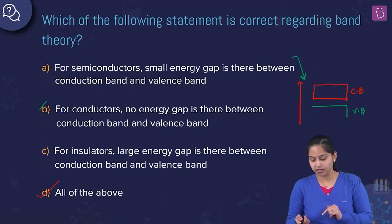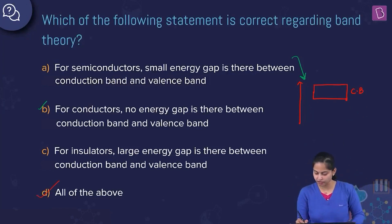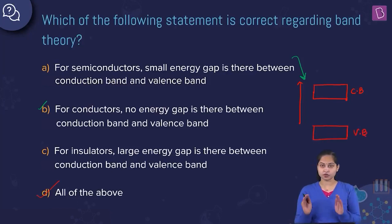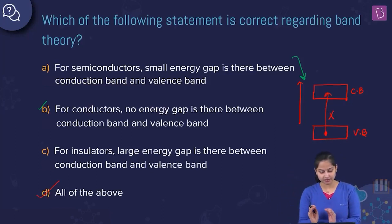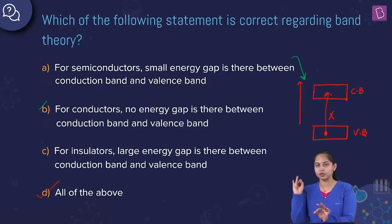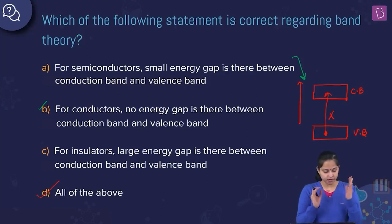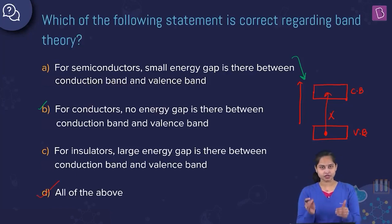For insulators, there is a large energy gap between the valence band and conduction band, because of which an electron cannot jump from the valence band to the conduction band. Hence, there is no electricity produced. So we go with option D — all of the above statements are correct regarding band theory.